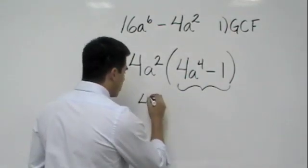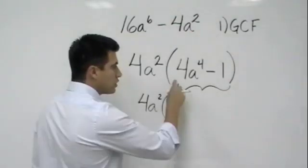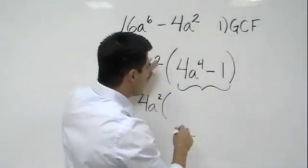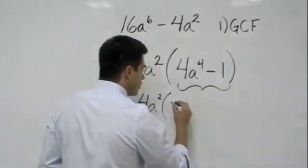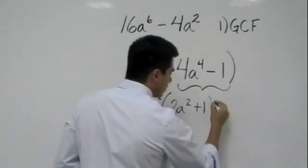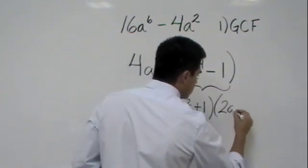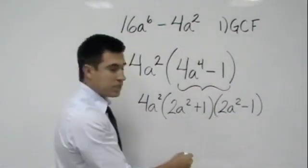So now, we would just bring this down, 4a squared, and it would be times—and remember, since we're doing the difference of squares, we just treat that as a difference of squares factoring problem. So that would be 2a squared plus 1 times 2a squared minus 1.